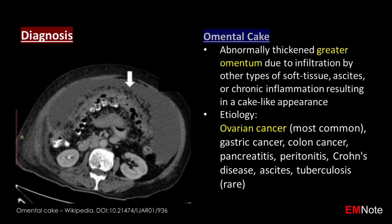The most common etiology of omental cake is ovarian cancer. Other causes include gastric cancer, colon cancer, pancreatitis, peritonitis, Crohn's disease, ascites, and tuberculosis.